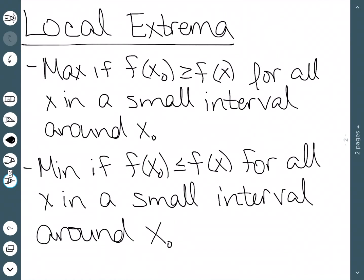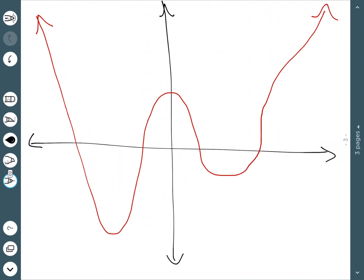So now that we've defined these, let's look at a couple of examples to make this more evident. Here I have the graph of a function and we can see that this point right here is going to be a global minimum because it is the smallest point on this graph. However, this point right here is our local minimum because if I just restrict myself to a small portion of the graph, it is a minimum.